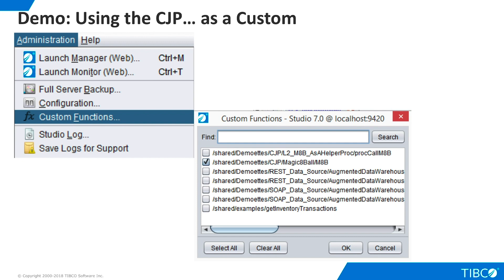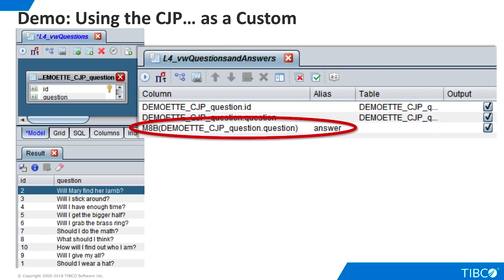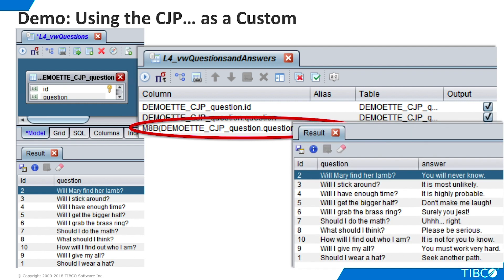Now we can use our custom Java procedure in even more interesting ways. As we noted earlier, our corporate data warehouse holds a repository of questions. Let's modify this view so it contains both questions and answers. On the Grid panel, we create a new column. This column simply repeats the question column, but we wrap it with the new M8B function, which will transform the question into an answer. Now when we execute, our virtual view presents both questions and answers. This makes our data warehouse appear to be much bigger and more powerful than its actual physical contents would indicate.